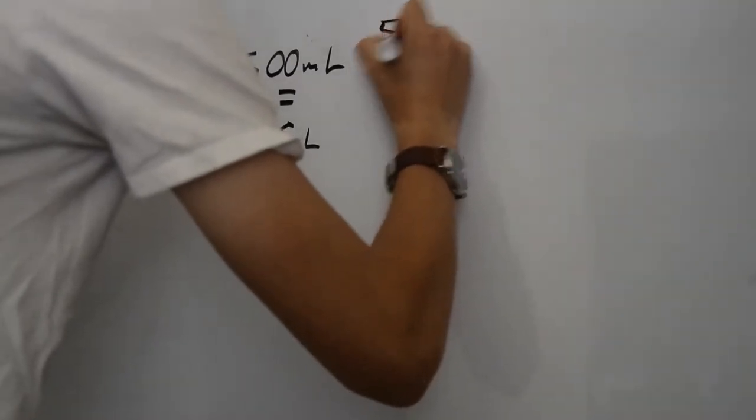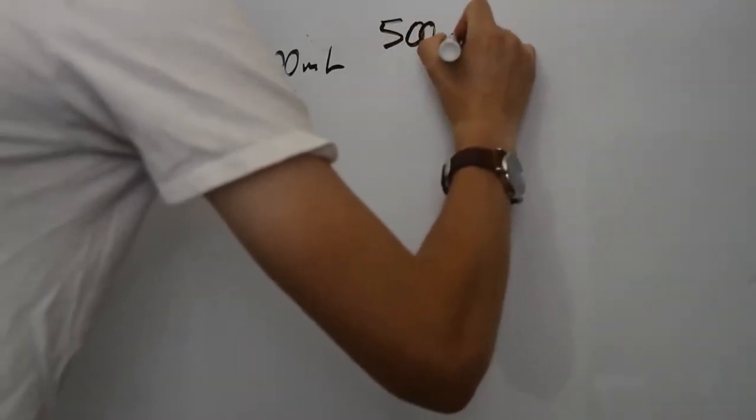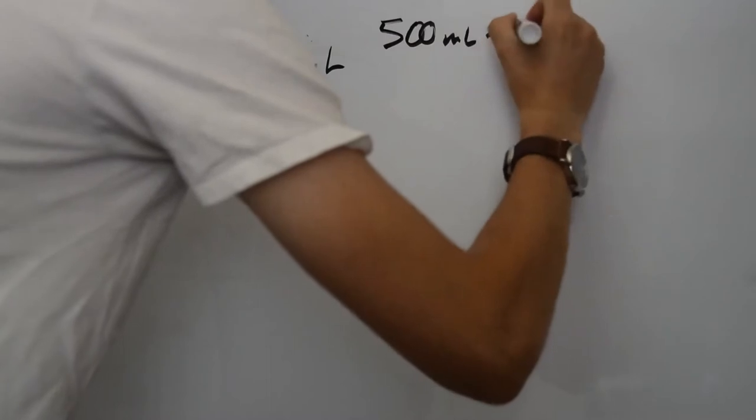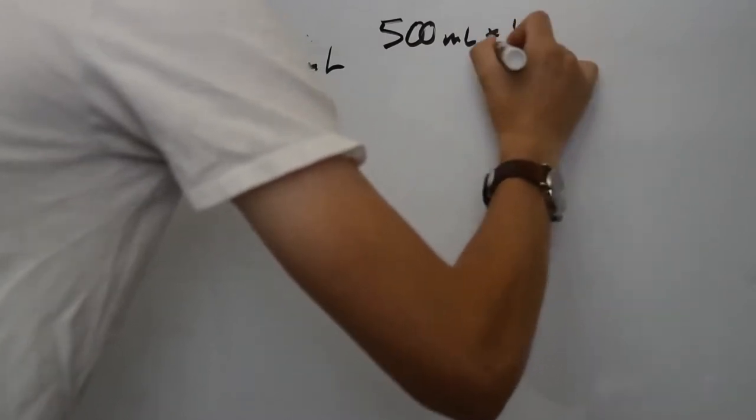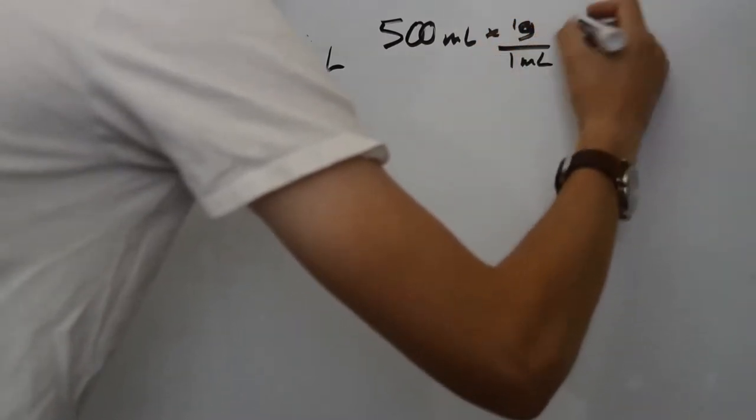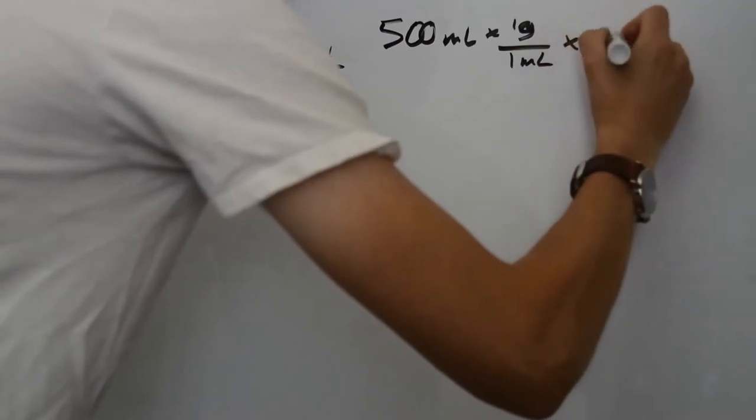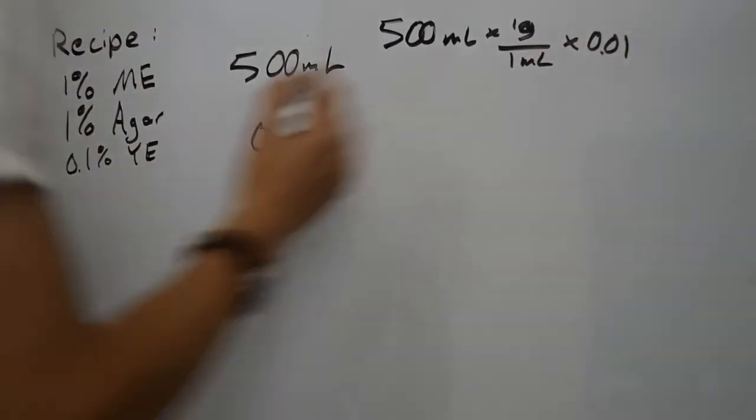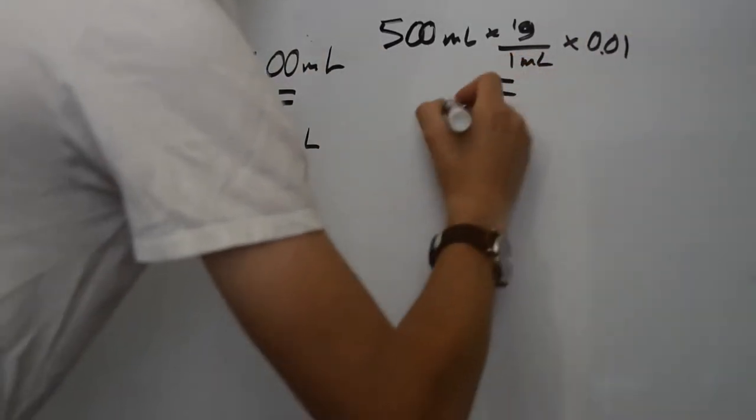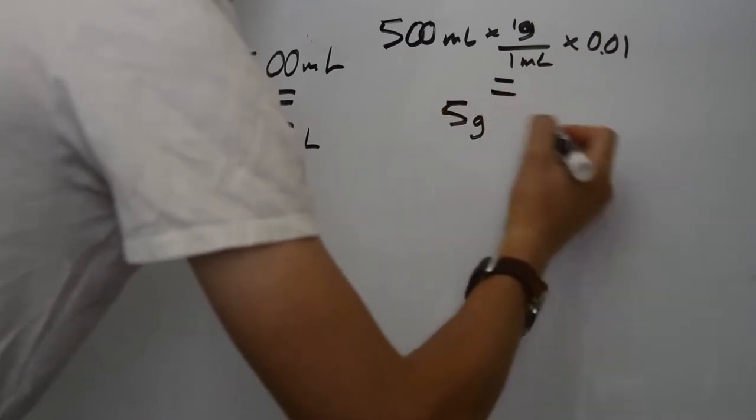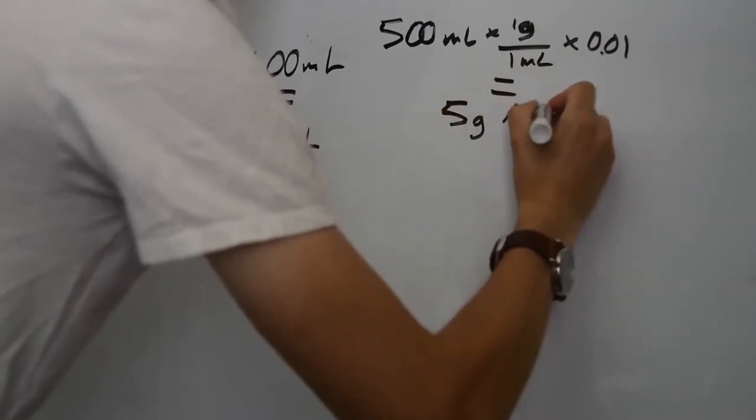500 milliliters times 1 gram per milliliter times the percentage expressed as a proportion will give us 5 grams of malt extract and the same for agar because these are the same proportion by weight.